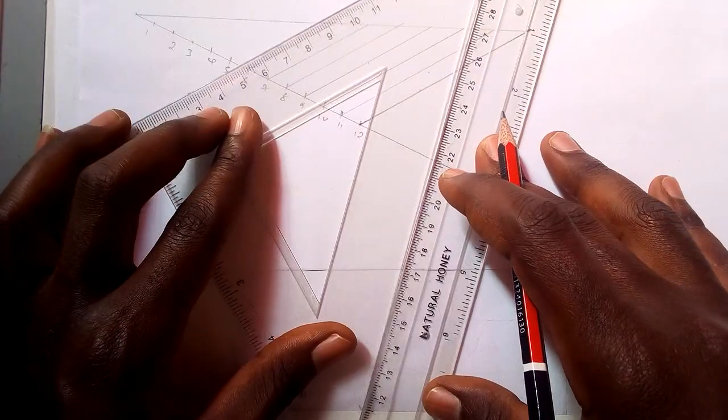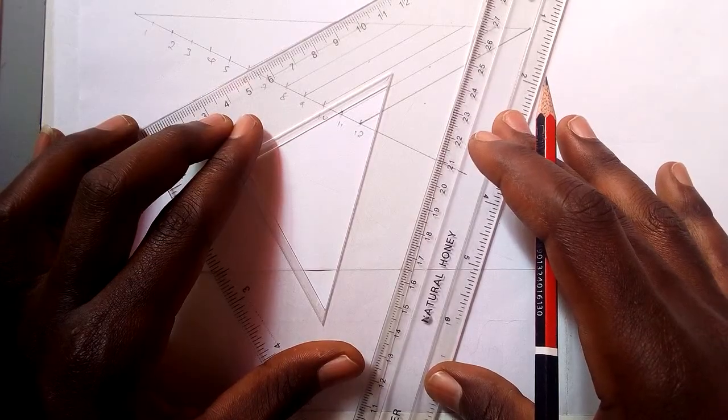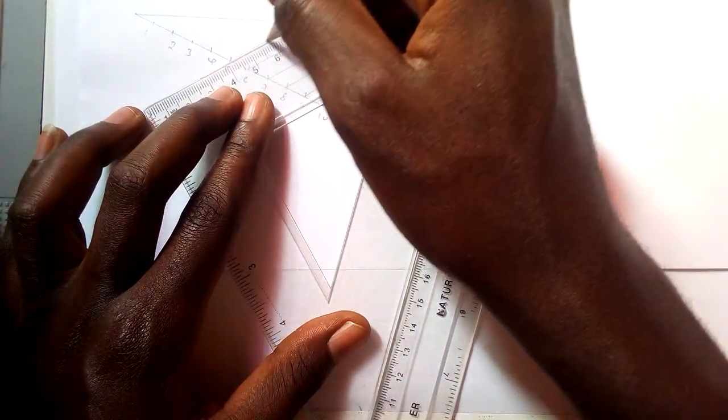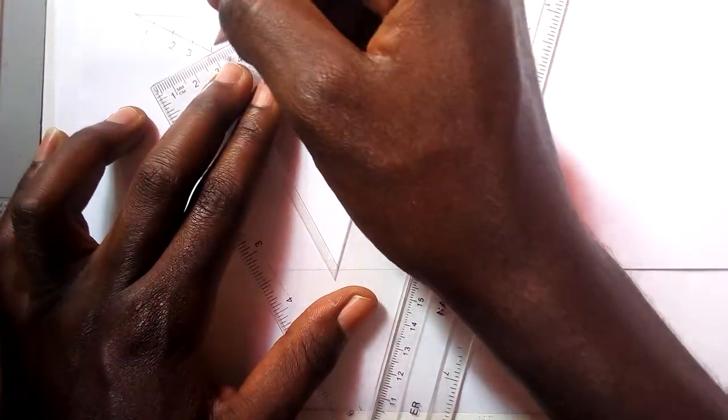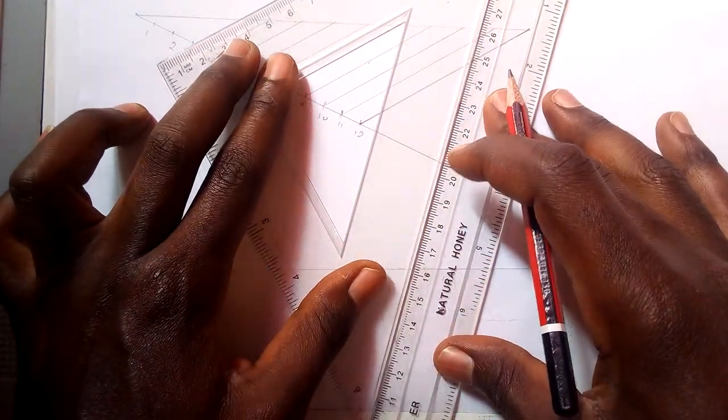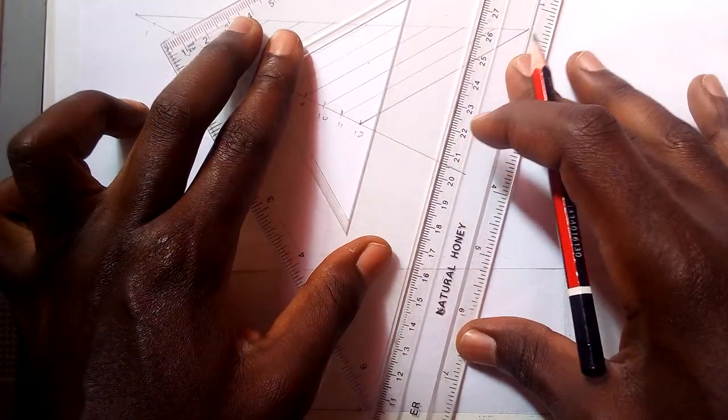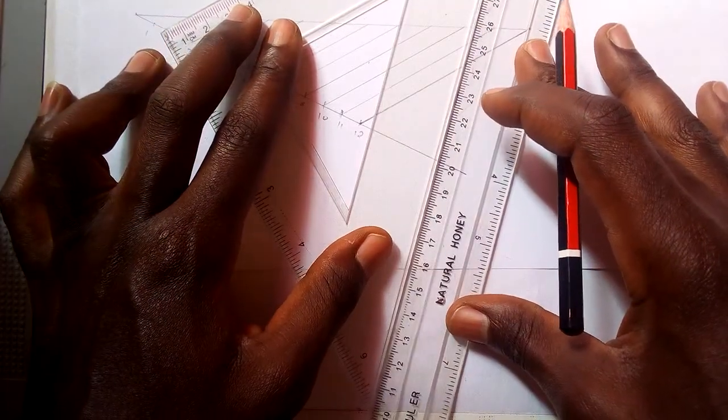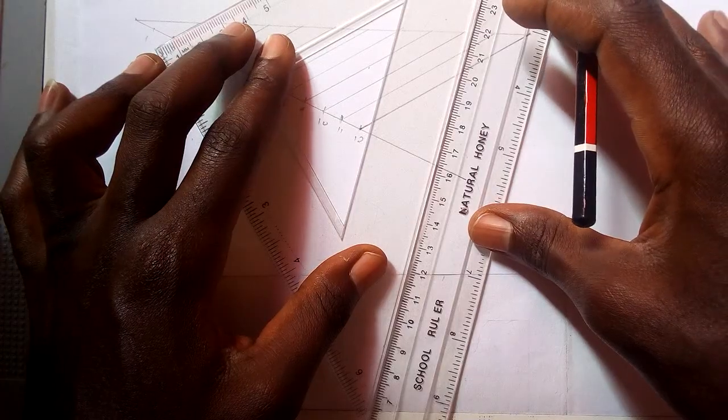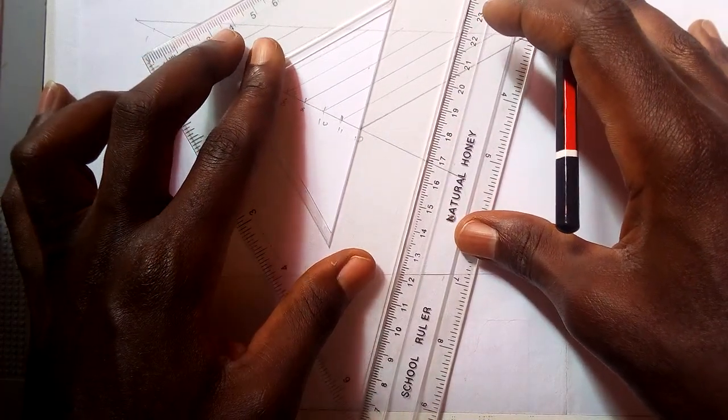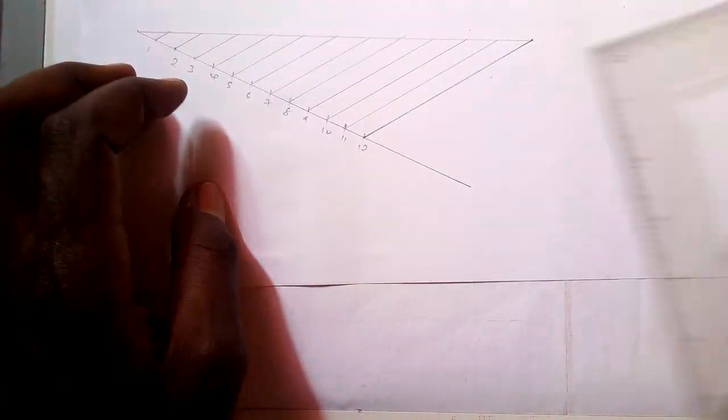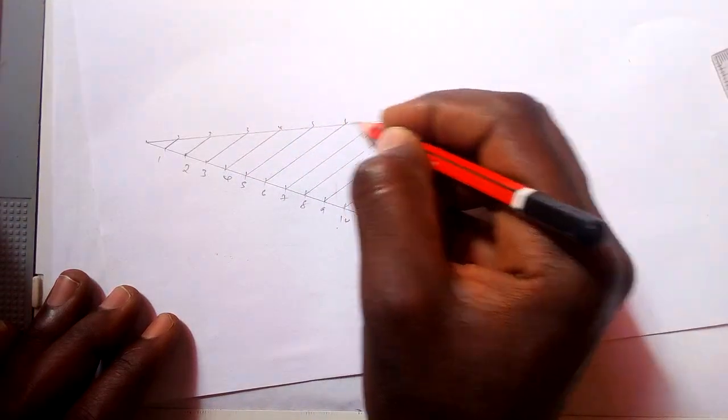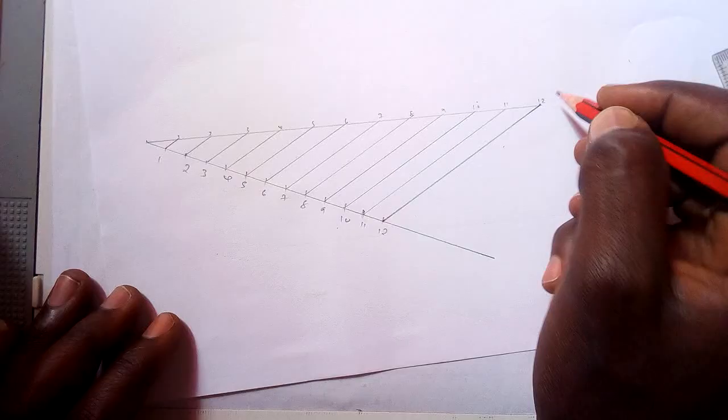Drawing the parallel lines to touch our points: 1, 2, 3, 4, 5, 6, 7, 8, 9, 10, 11, 12. So these are the equal parts.